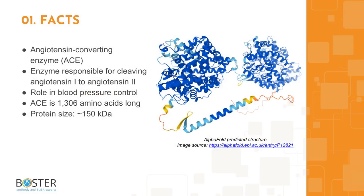Topic 1: Quick facts about ACE. As the name suggests, angiotensin converting enzyme, or ACE, is an enzyme responsible for cleaving angiotensin 1 into angiotensin 2. ACE plays an important role in blood pressure control. The protein is 1306 amino acids long and runs about 150 kilodaltons on a western blot.